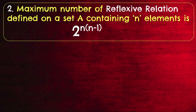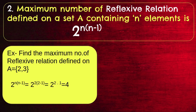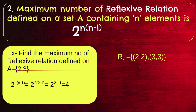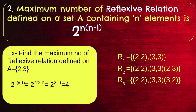The maximum number of reflexive relations defined on a set A containing N elements is 2 raised to N(N−1). For example, when N=2, that is 2 raised to 2×(2−1) = 2 squared = 4. We can verify: R1={22,33}, R2={22,33,23}, R3={22,33,32}, R4={22,33,32,23} — each is clearly reflexive. So the answer is 4.